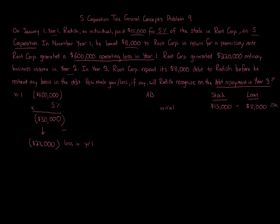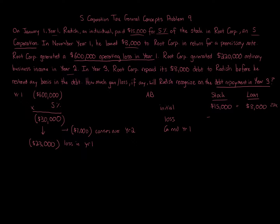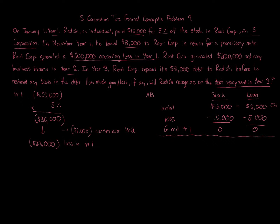The remaining $7,000 loss carries over to Year 2. That brings our basis at the end of Year 1 down to zero — we subtract both the $15,000 stock basis and the $8,000 loan basis, bringing the total to zero. That is our Year 1 analysis.